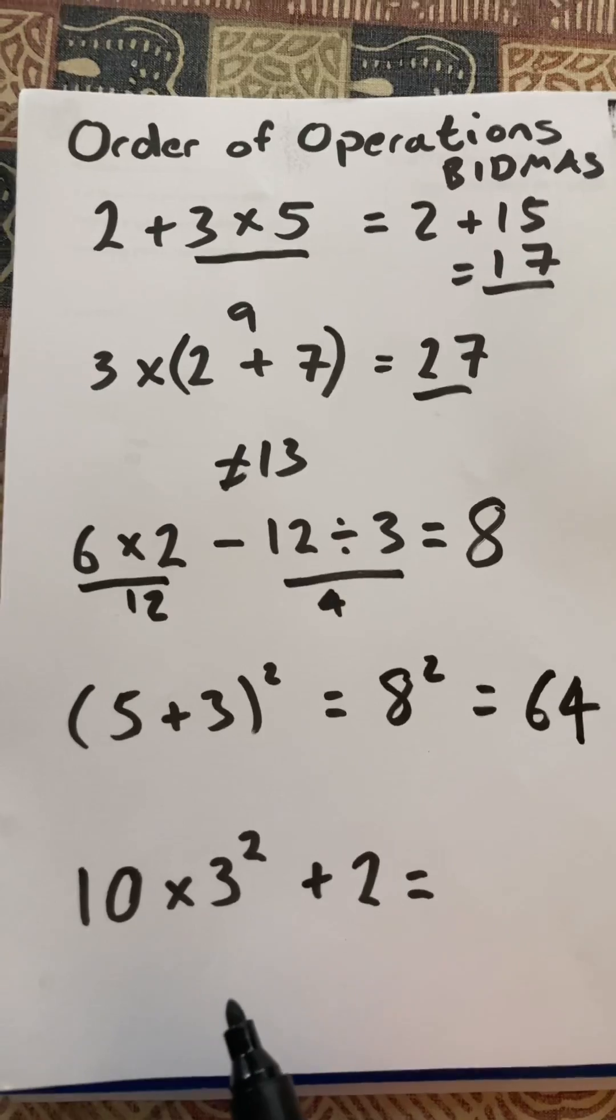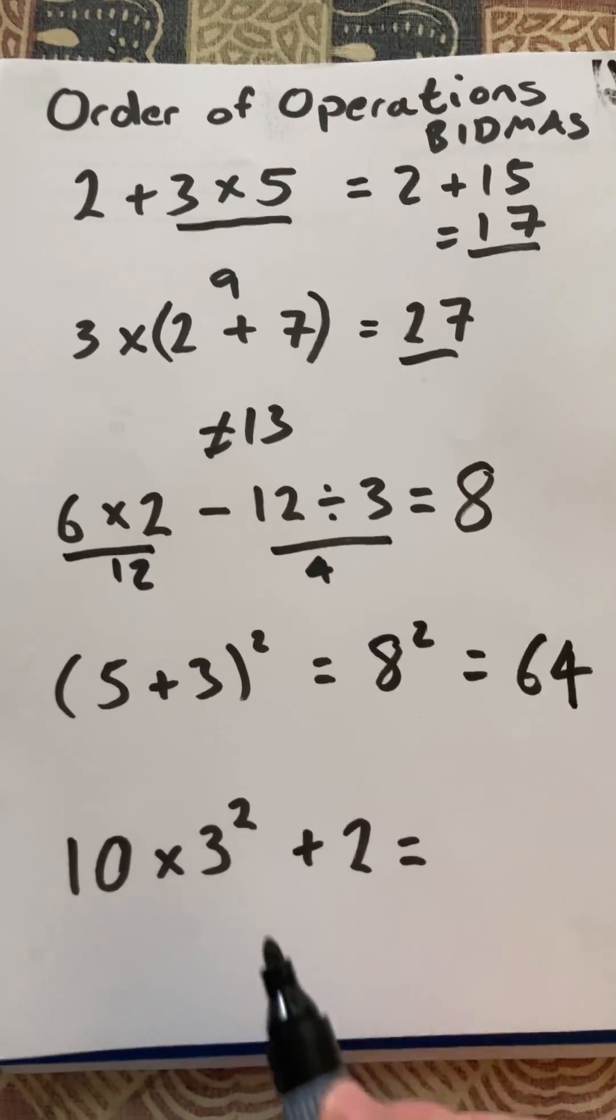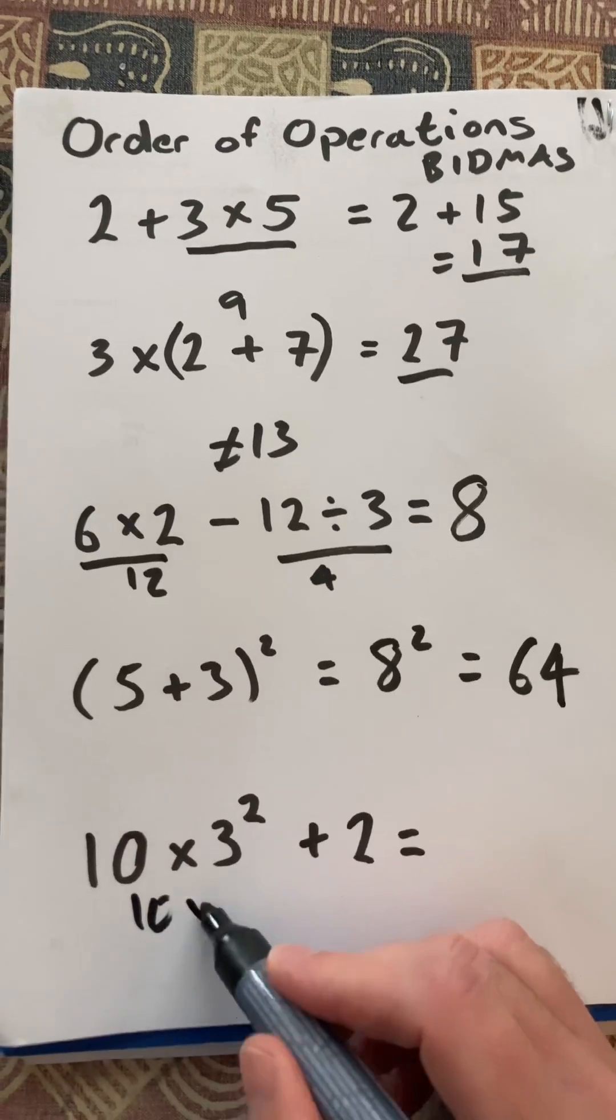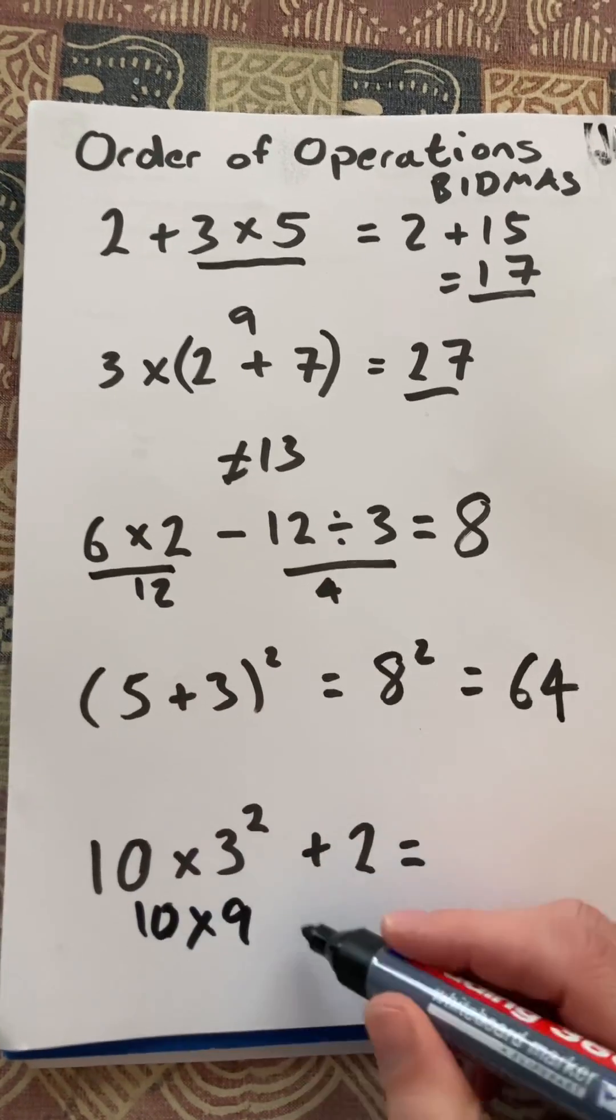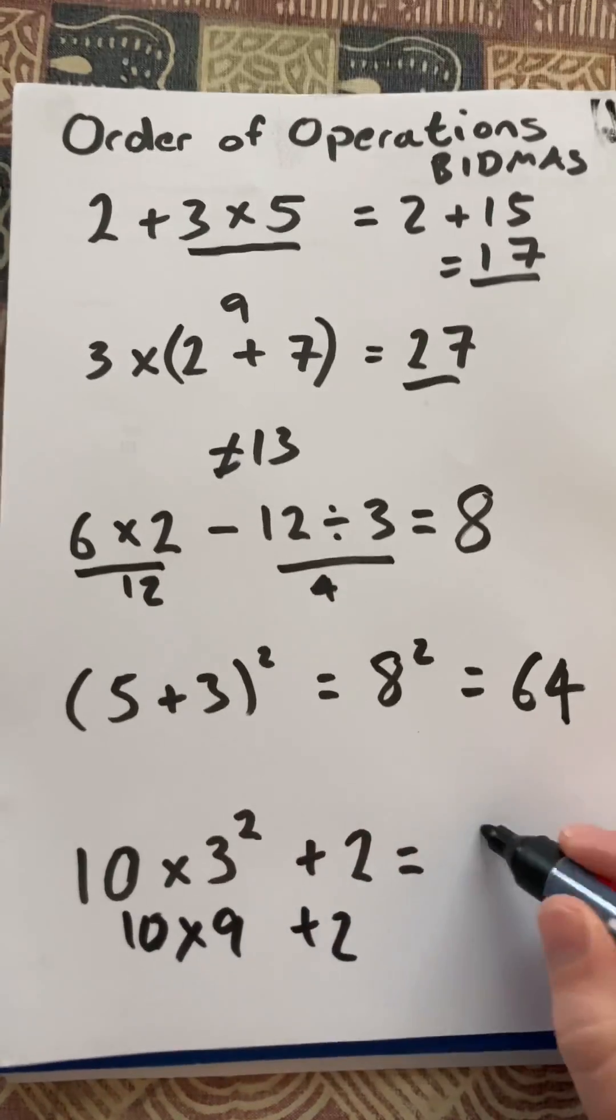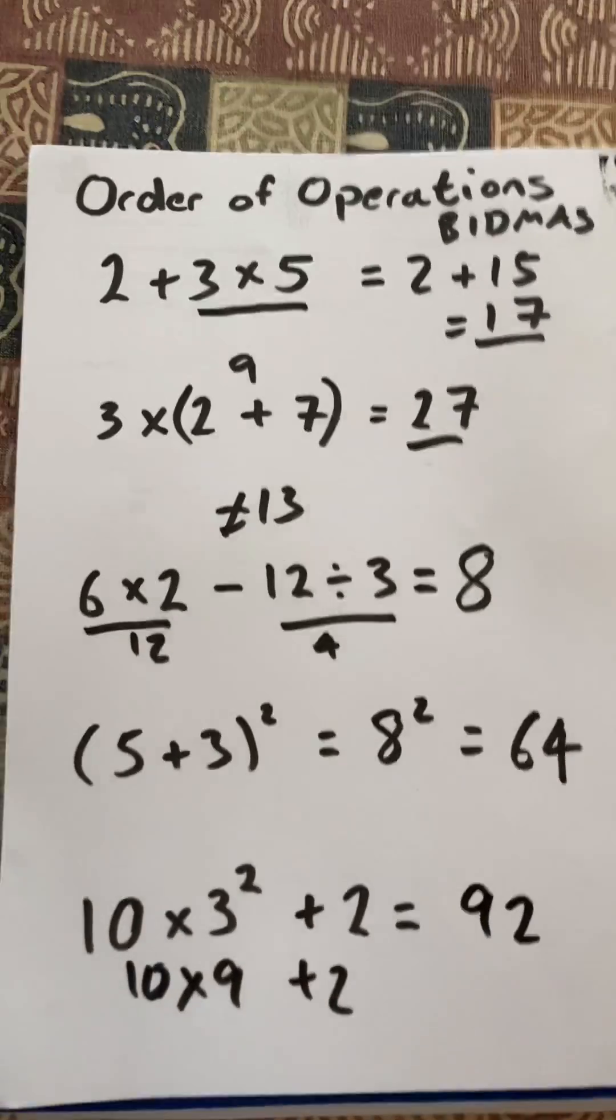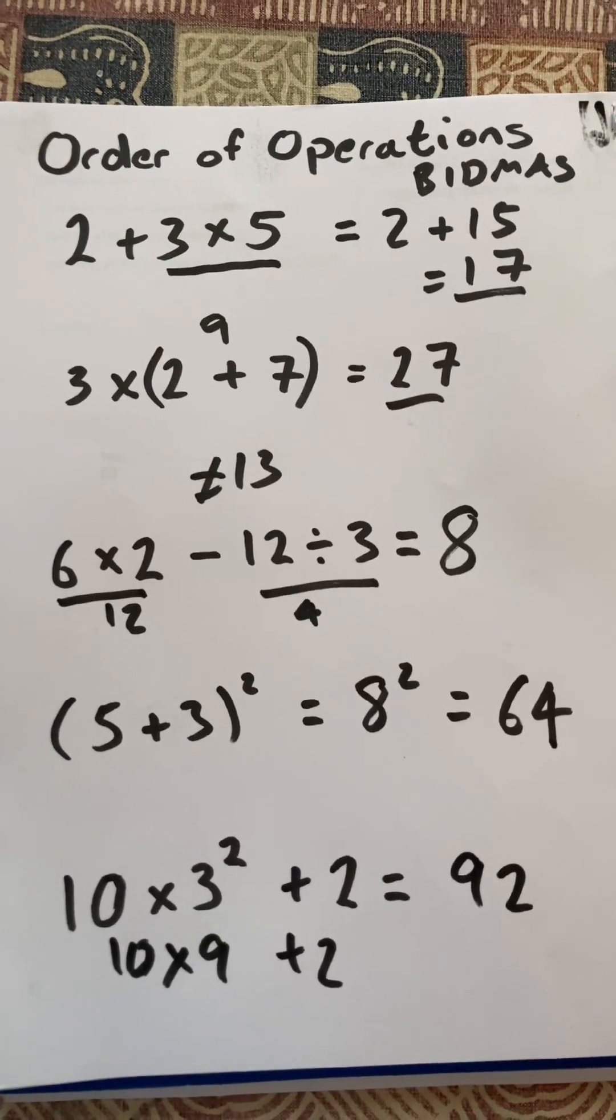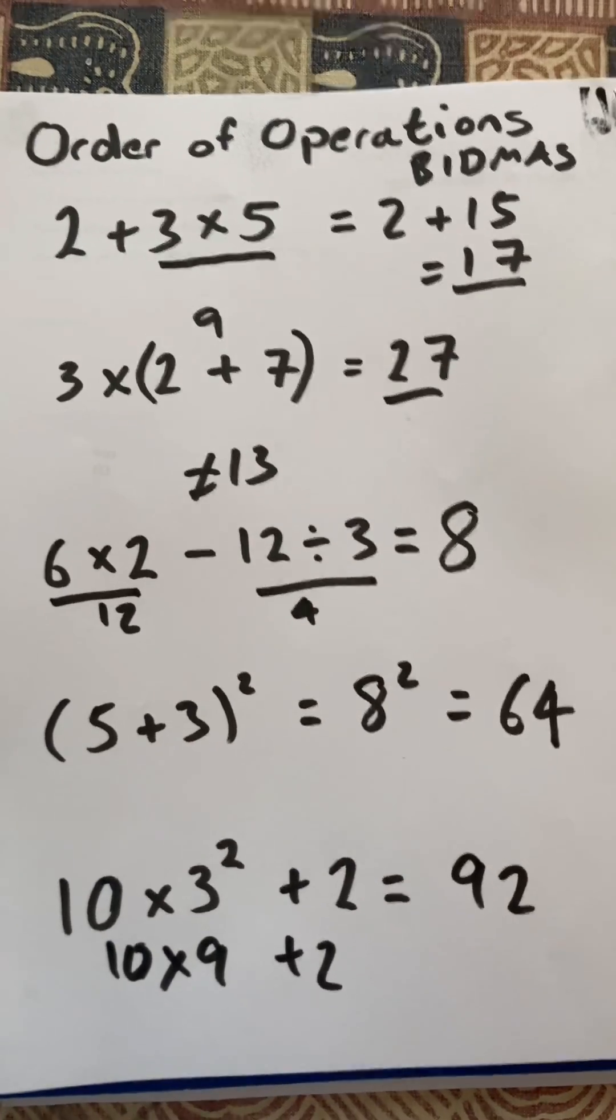Last one for the short, 10 × 3² + 2. Let's do the indices first, so it's 10 × 9 + 2. So that'll be 90 + 2 is 92. There we go. That's a short demonstration of some of the operations in order of operations or BIDMAS. Thanks for watching.